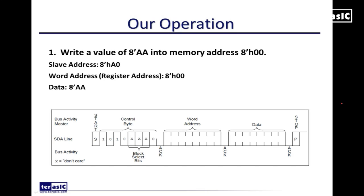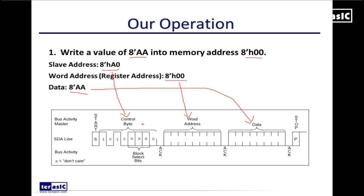Our operation for today is going to be writing a value of AA, or 10101010, into memory address 00. To recap: our slave address for the Microchip EEPROM is A0, which goes into our control byte; the word address of 00 goes into our word address field; and our data AA goes into the data field. Every time we specify our addresses or data, we should get an acknowledge from the slave. The acknowledge is a low signal — the slave pulls the data line low to confirm it has received the address or data from the master.